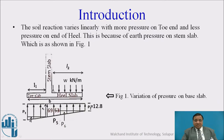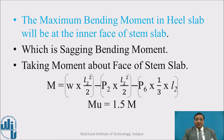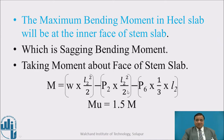This is the inner face of the stem slab. At this location, the slab is going to deform like this. Therefore, at the inner face of the stem slab, we get the maximum bending moment, which is a sagging bending moment. We are supposed to find out this maximum bending moment. The bending moment about the face of the stem slab is equal to W × L2²/2, where W is the pressure from the earth downwards, minus P2 × L2²/2, that is UDL upwards, then plus P6 × L2/3. That will be the bending moment at the inner face of the stem slab, which is the maximum bending moment in the heel slab. MU = 1.5 × M.